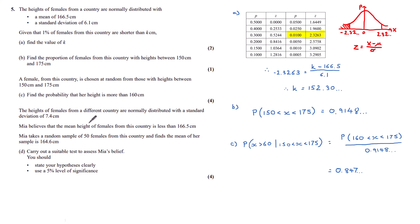The heights of females from a different country are normally distributed with a standard deviation of 7.4. Mia believes that the mean height of females from this country are less than 166.5 centimetres. Mia takes a random sample of 50 females from this country and finds the mean of her sample is 164.6. Part D, carry out a suitable test to assess Mia's belief. We should state our hypothesis clearly and use a 5% level of significance.